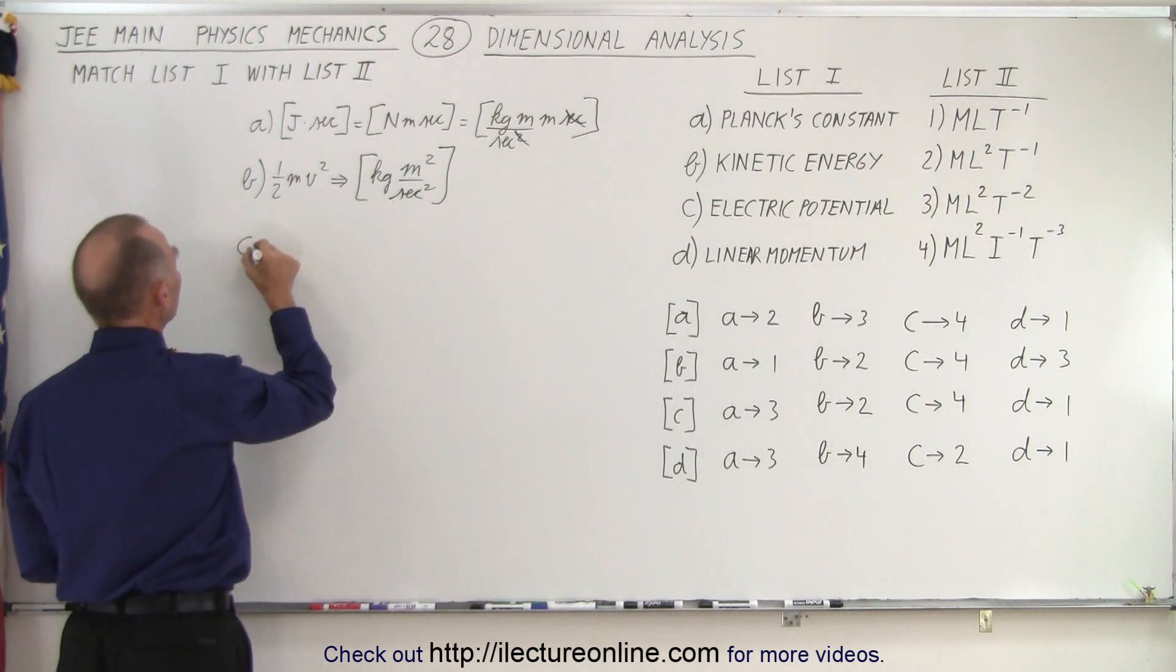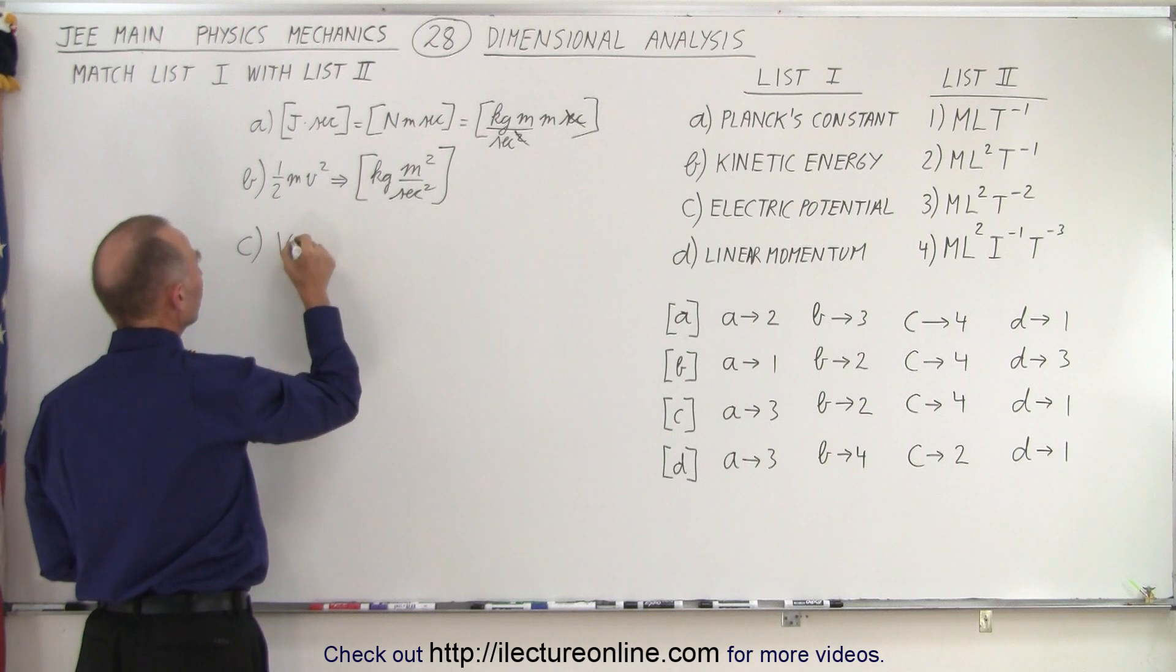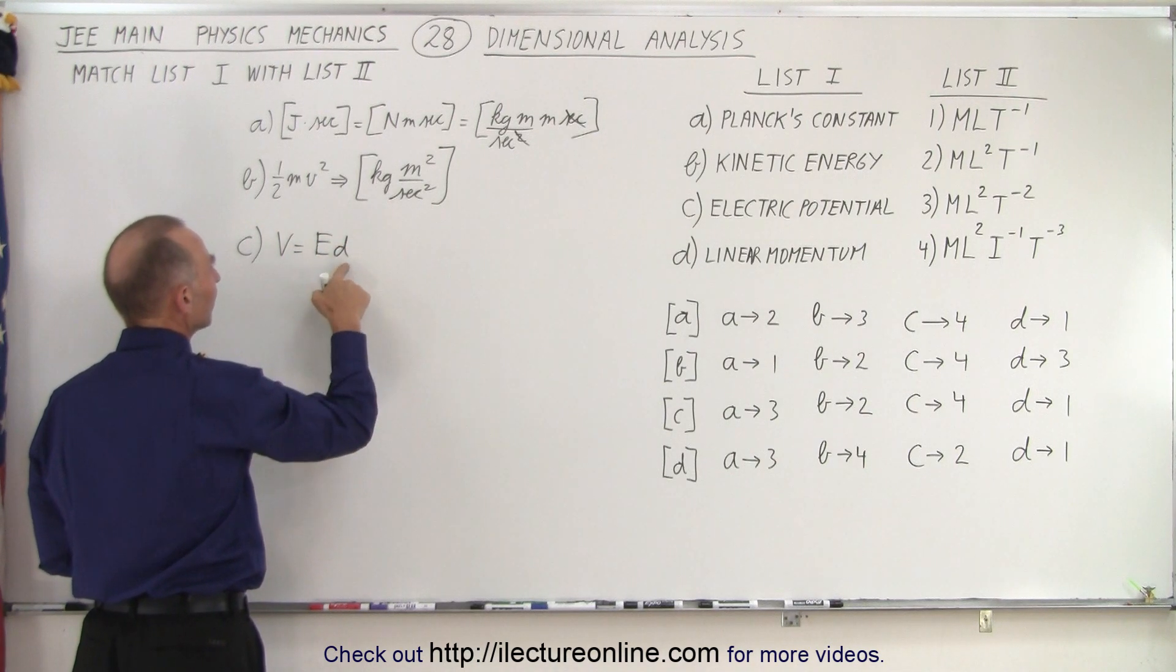For electrical potential, so what we can say is that voltage can be calculated by multiplying the electric field times the distance if it's uniform.